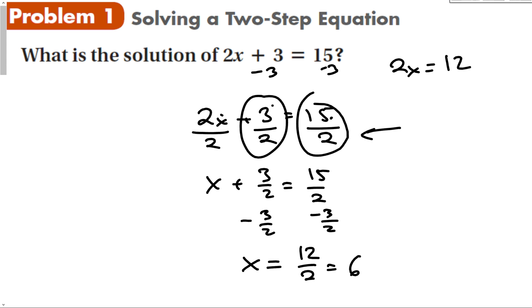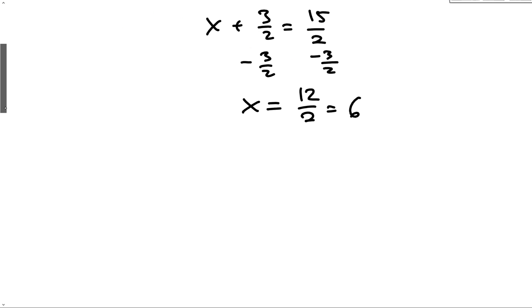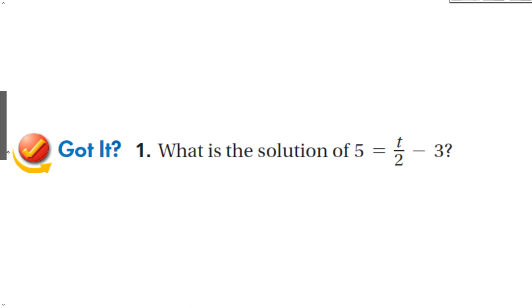We want to make the problem simpler with every operation. So when you see a two-step equation, find the variable and work through the order of operations backwards: first add or subtract something from both sides, then multiply or divide both sides.